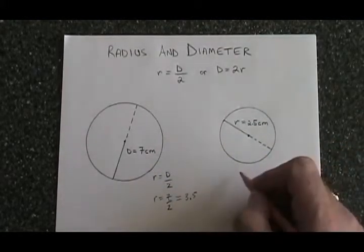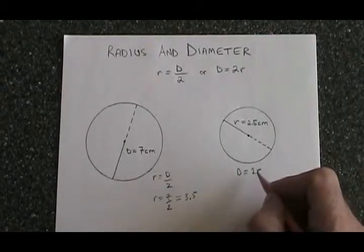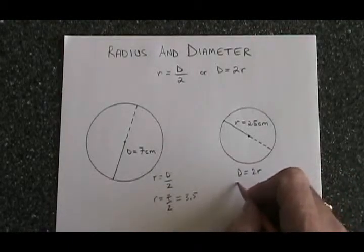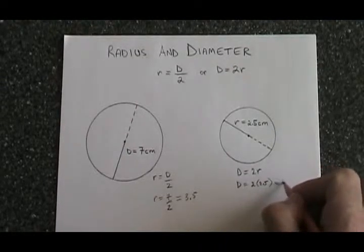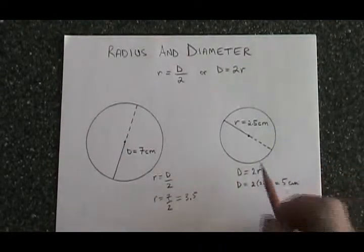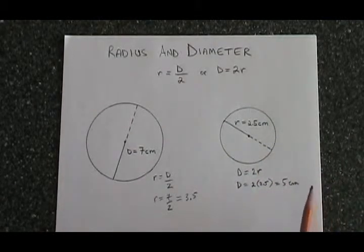Now, knowing our radius is 2.5 cm, I write D equals 2R. I replace the R with 2.5 cm. D equals 2 times 2.5 equals 5 cm. Knowing that the radius is 2.5 cm, I'm able to calculate the diameter of 5 cm.